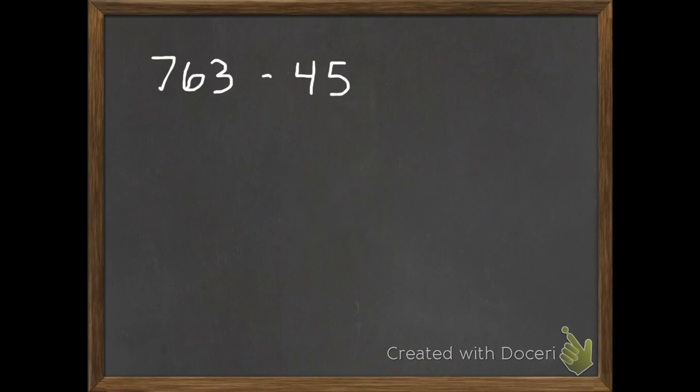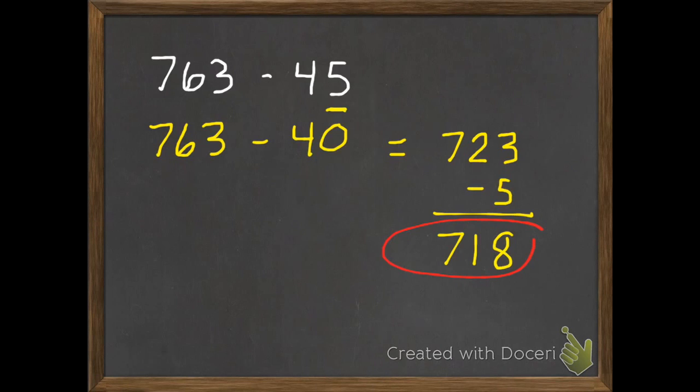Subtraction. We have some greater numbers. We're up to the hundreds on the first one. 763 subtract 45. So I could just subtract 40, which makes that easy to do mentally. 763 subtract 40 is 723. So I just subtracted 4 from my tens. So the 6 turned to a 2. But I need to subtract 45, and I only subtracted 40. So I have 5 more I need to subtract, which equals 718.